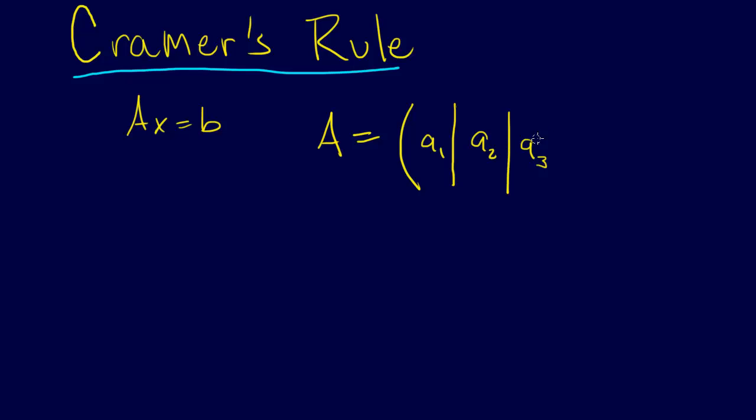And actually instead of A3, let's go dot dot dot A_N. So let's say A has N columns, and this is the matrix A.